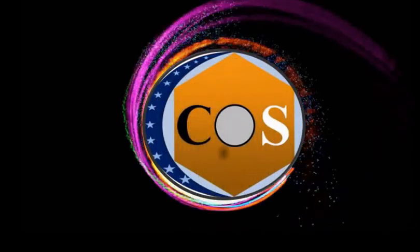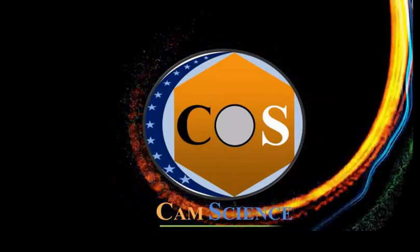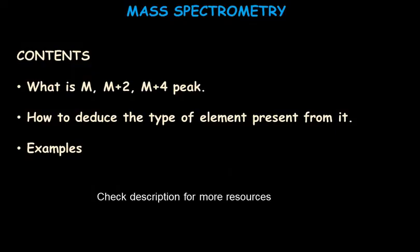It's chemistry and you are watching GAM Science. In our earlier videos we have already seen the working of mass spectrometer and the use of mass spectrum to analyze and deduce an organic compound and isotopes. We have already seen the use of M and M+1 peak, and in this video we will study what is M, M+2 and M+4 peak, and how it is used to deduce the type of element present in an organic compound, with examples.